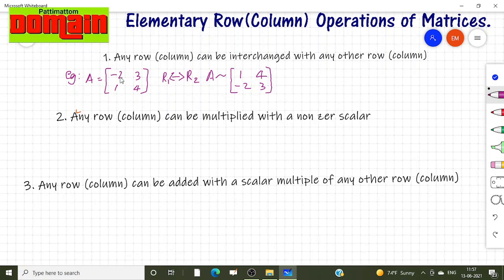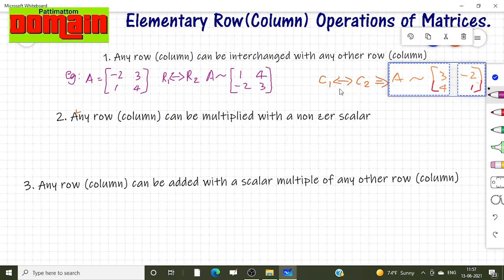And second row becomes first row. Similarly column transformation also allowed. Two columns mutually interchanged. C1 and C2. We got like this.